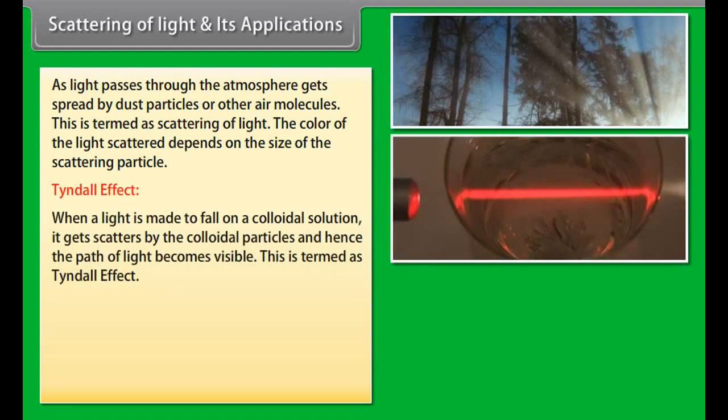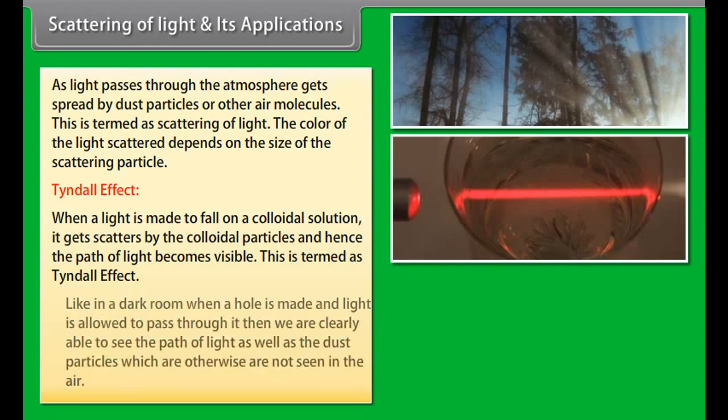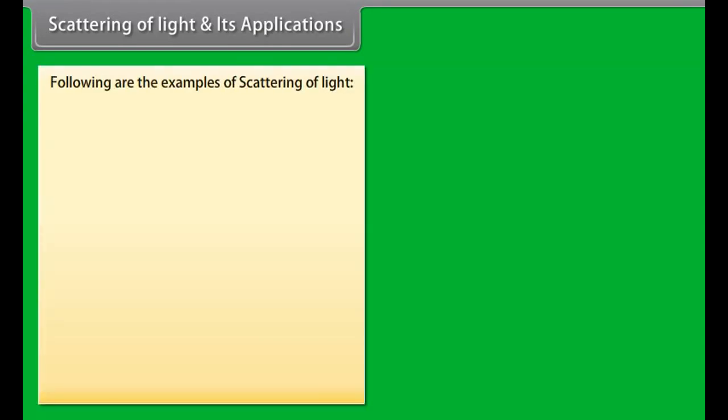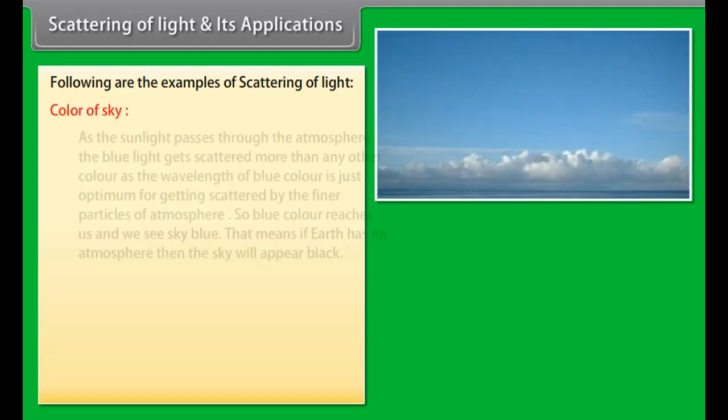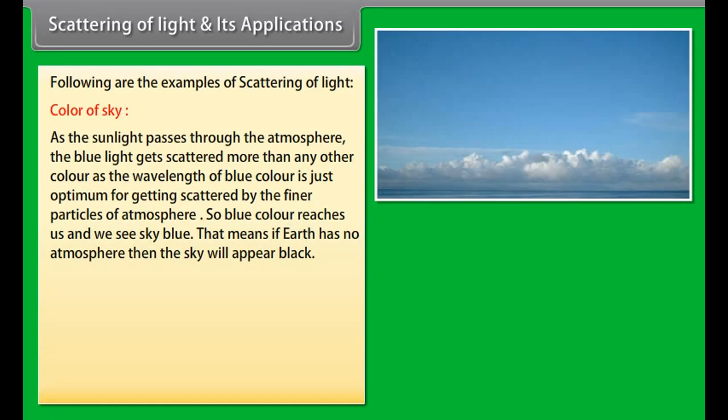For us, sunrise occurs when sun is above the horizon. When sun is below horizon, sunlight entering the atmosphere gets refracted due to difference in density of the atmospheric layers. Because of this, sun is seen above the horizon and we see the sunrise two minutes before sun actually reaches horizon. Similarly, sun sets for us two minutes late because of atmospheric refraction only.